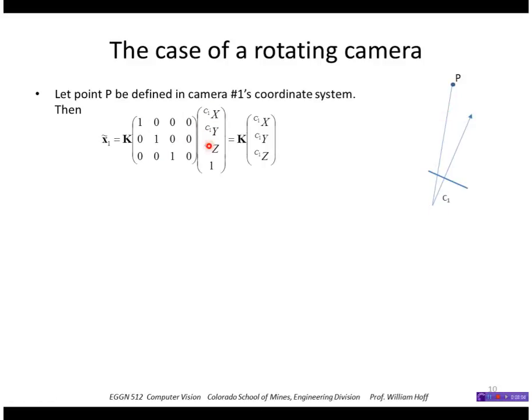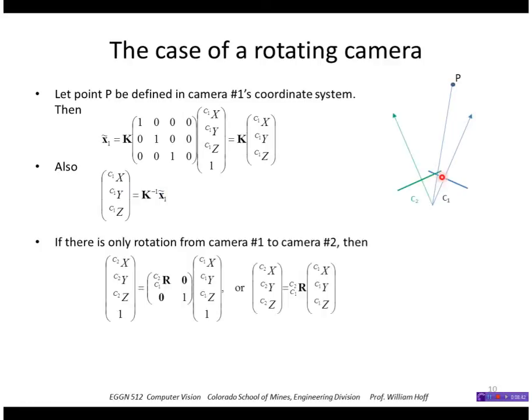So this is the XYZ point in camera coordinates. This matrix is the extrinsic camera matrix which simply strips off this one, and then the K is the intrinsic matrix which contains the focal length and image center. So that gives us a homogeneous point in two dimensions, I'll call it x1 wiggle. I can take the inverse of this to get the 3D point as equal to K inverse times the homogeneous 2D point.